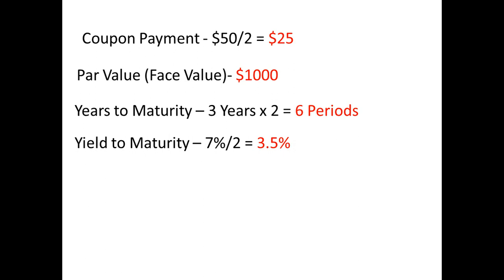If the bond pays a 5% annual coupon rate and the par value is $1,000, then it pays a $50 interest payment annually. If these payments are made semi-annually, then it makes 2 payments per year, so the coupon payments are $50 divided by 2, which is $25.